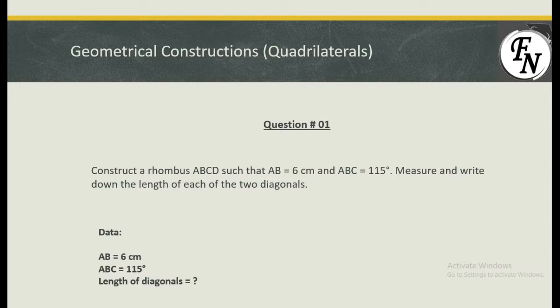To draw a rhombus we need to recall the properties of a rhombus — that a rhombus has all four sides of equal length. That means if I talk about the length AB, then BC, CD, and DA all four lengths would be equal, that is 6 cm. There is one angle given, that is 115 degrees, and there is no property that all angles are the same in a rhombus. We will use this particular angle and the length of all four sides to draw this rhombus.